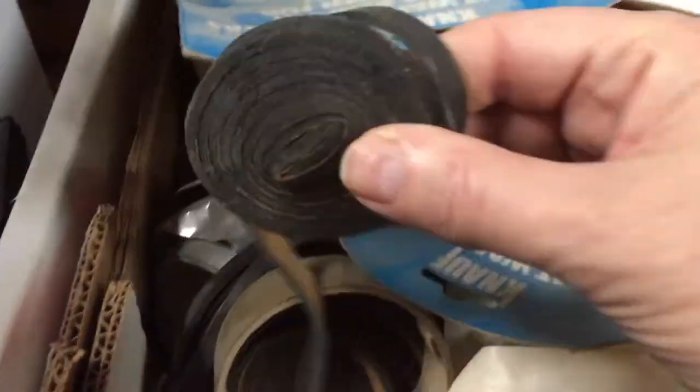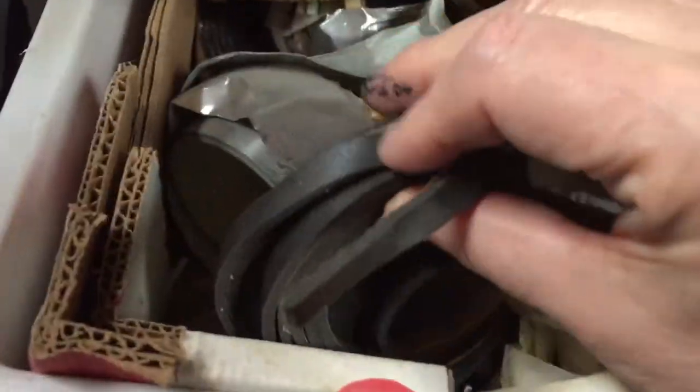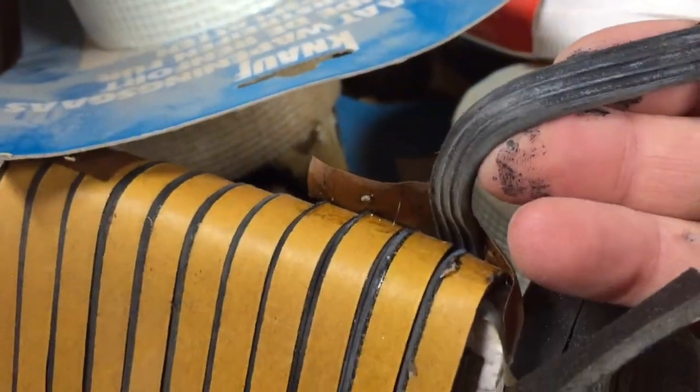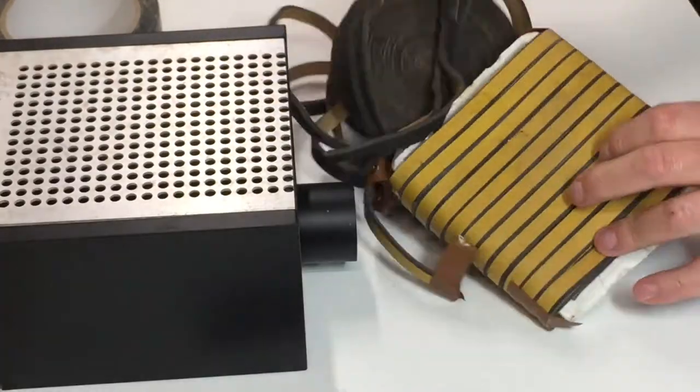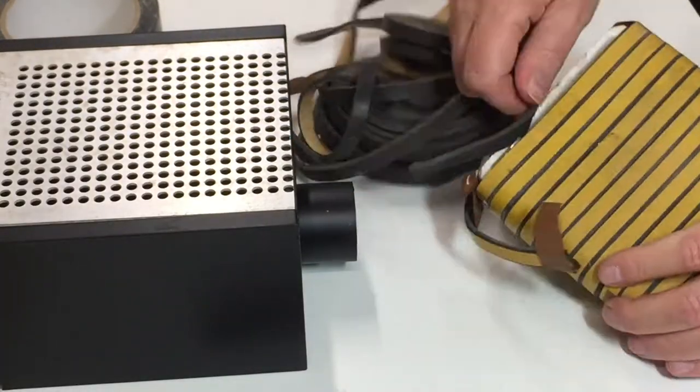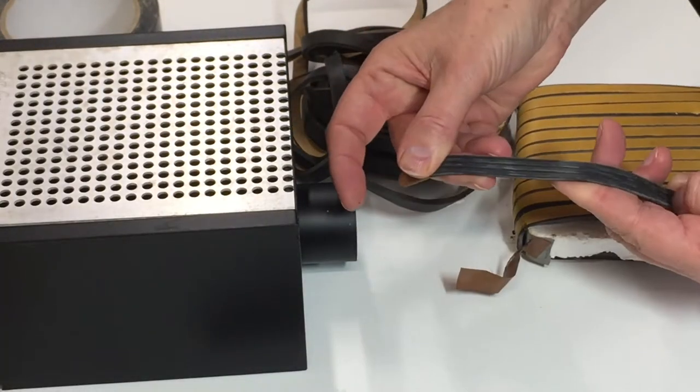I have a box full of all kinds of tape in the attic, and in it I found some draft excluder tape. I chose the self-adhesive rubber strips, which I stuck to the edges of the box. This is supposed to help improve suction.